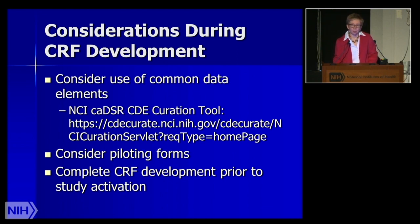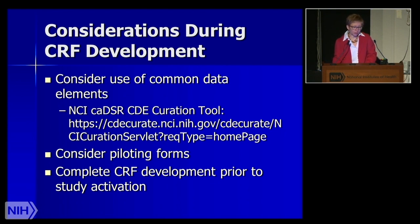Consider using common data elements. NCI has built a repository — like a warehouse — of commonly used data elements that research programs are strongly encouraged to use, with investigators expected to show common data elements across trials. If developing a new form, consider piloting it amongst a few sites or research staff to see if it captures the desired information. Complete CRF development prior to study activation, as these forms help research sites assess how complex the study will be and plan appropriate staffing.